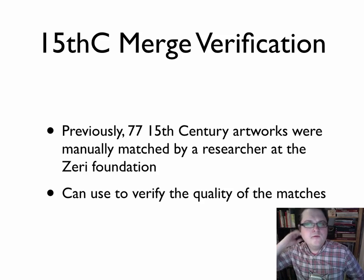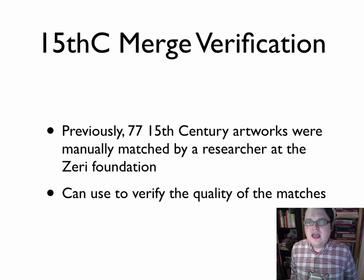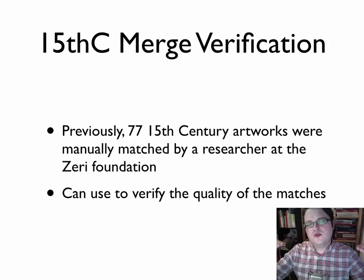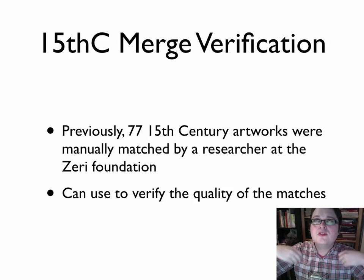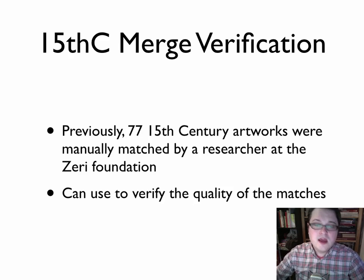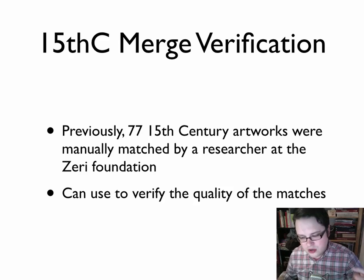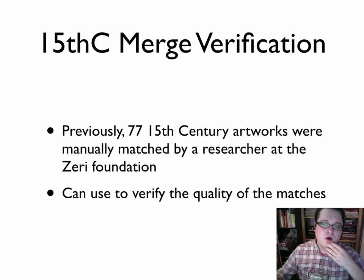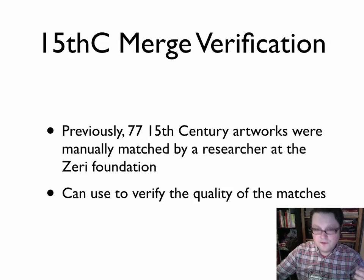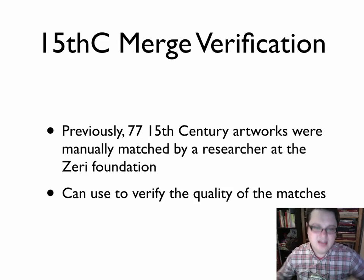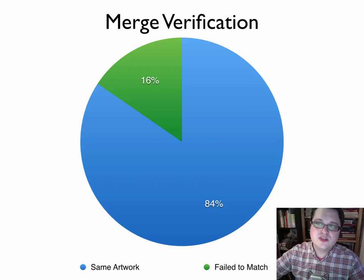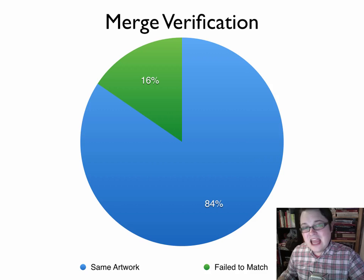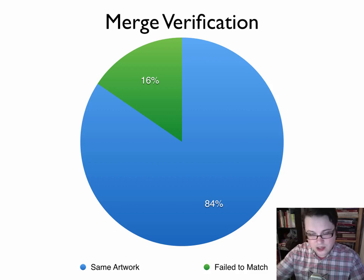One of the big things we wanted to do was verify the matches that were happening and make sure the relationships we were seeing between the Frick's and Zuri's collections were confirmed by matches a researcher had done manually. A researcher at Zuri — Francesca — went through and found 77 artworks that were in both the Zuri 15th century collection and the Frick's Anonymous Italian collection. We then determined whether those matches were confirmed by the image analysis. As you can see, 84% of those manually completed matches were confirmed — certainly very good.